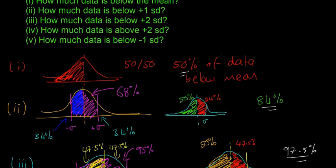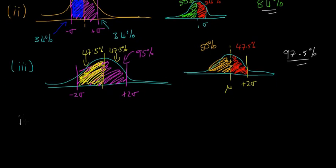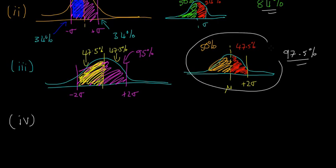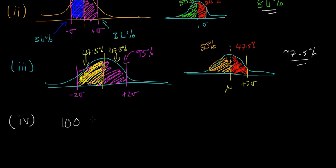Next, part four: how much data is above plus two standard deviations? We know that below plus two standard deviations is 97.5%, and it all has to add up to 100%. So we just go 100 minus 97.5, which equals 2.5%. That's a trick you'll see over and over again — when it's difficult to find what's above a point, subtract what's below from 100%.